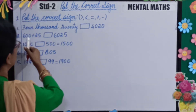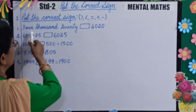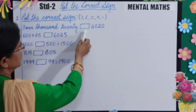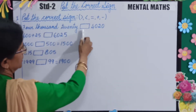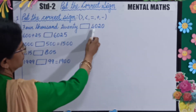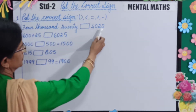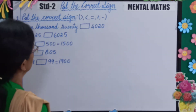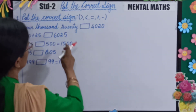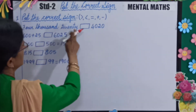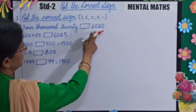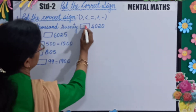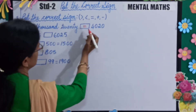So your first question is 4020 dash 4020. So which sign will you put, children? Both are the same, so you will put the equal sign.